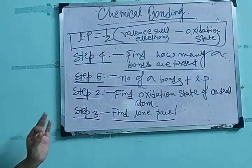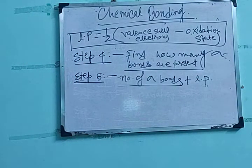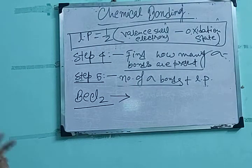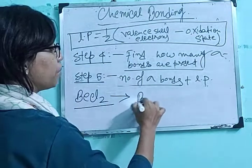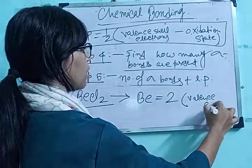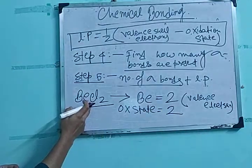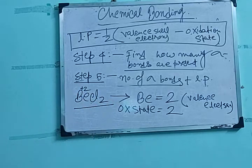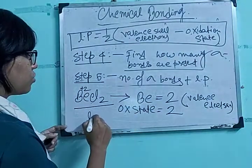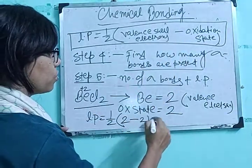For example, BeCl₂ — in step 1, the number of valence electrons on beryllium is 2. In step 2, the oxidation state is +2, because two chlorine atoms (2Cl⁻) give beryllium a +2 oxidation state. In step 3, lone pairs = (½ × 2) − 2 = 0. So beryllium has no lone pair electrons.